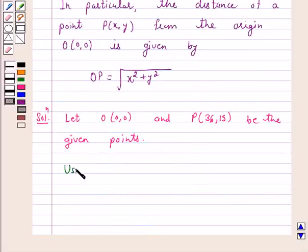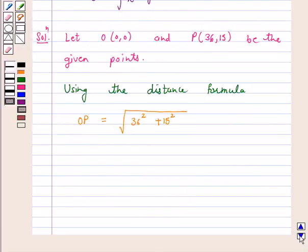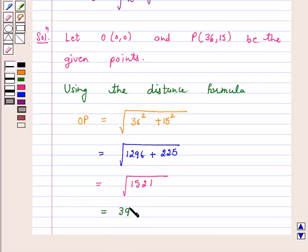Using the distance formula, when one point is the origin and the other is point P(36,15), we have the distance OP = √(36² + 15²). This equals √(1296 + 225) which equals √1521, and this is equal to 39. So the distance between the origin and the point P whose coordinates are 36 and 15 is 39.